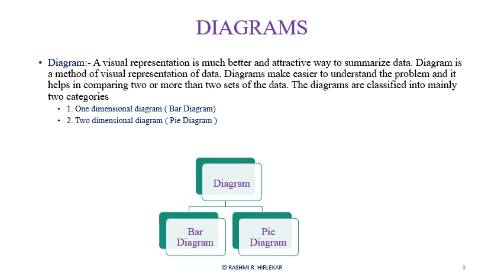Diagram makes it easier to understand the problem. It helps in comparing two or more sets of data. Diagrams are classified into two categories: the first one is one-dimensional diagram, and the second one is two-dimensional diagram.